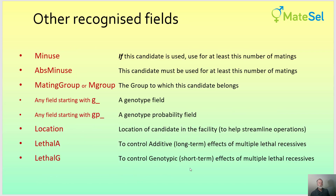Other recognised fields are min use and absmin use. The difference is that min use allows zero use of an individual, but if min use is 10, the individual must be used at least 10 times up to max use. Absmin use is absolute minimum use. There is also the mating group field, which we'll talk about later. Genotype and genotype probability fields start with G underscore and GP underscore. Location relates to the housing position of animals in a facility to help streamline mating operations. Lethal A and lethal G control additive long-term and genotypic short-term effects of multiple lethal recessives.